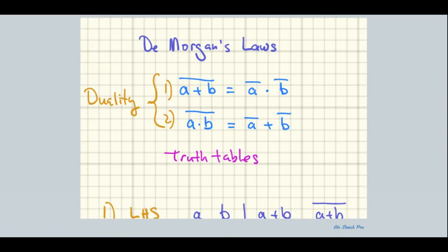I want you to notice something. This is the way programmers and people who do Boolean algebra think about it — everything gets NOTed. See the a that turns to ā; the NOT on plus becomes times; the NOT on b becomes b̄. It's the properties of AND, OR, and NOT. That's why we do sets first — so you think of these in terms of intersection and union.